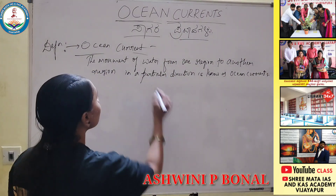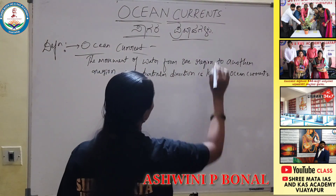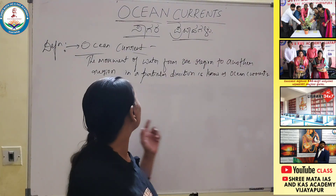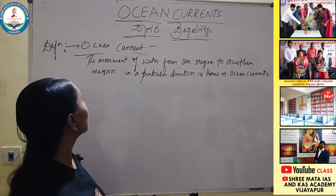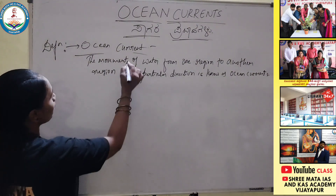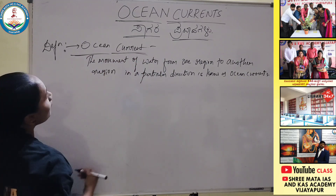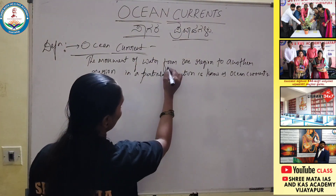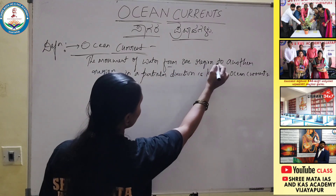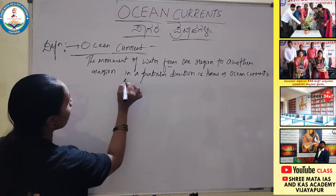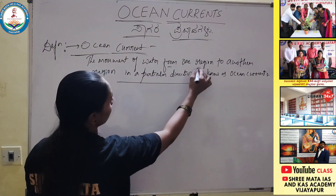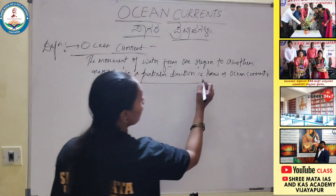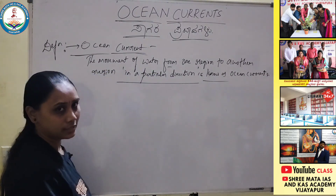In Kannada it is called Sagarapravahagala. First, the definition of ocean current. The movement of water from one region to another region in a particular direction is known as ocean currents. This is important.